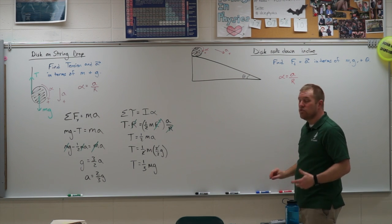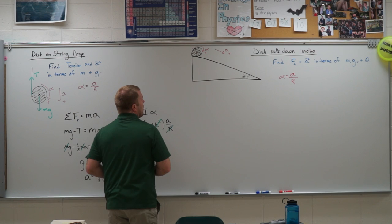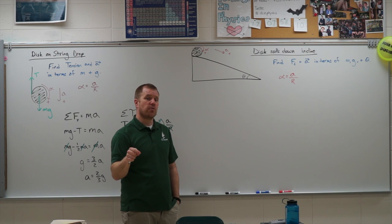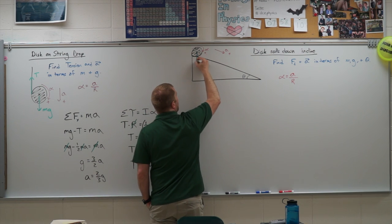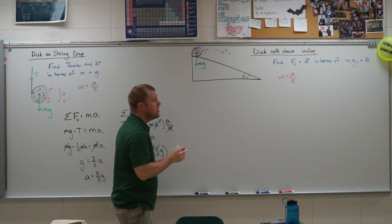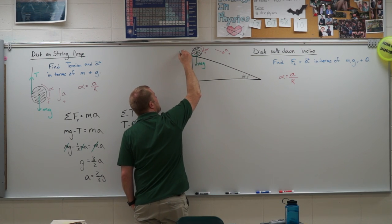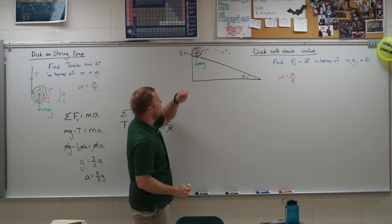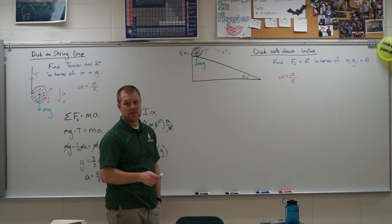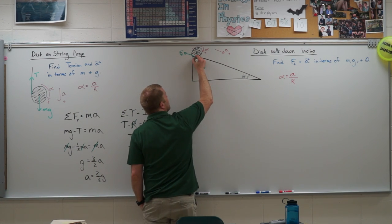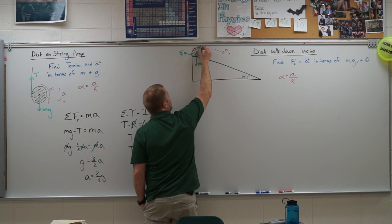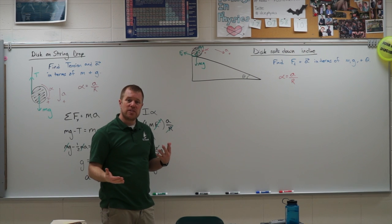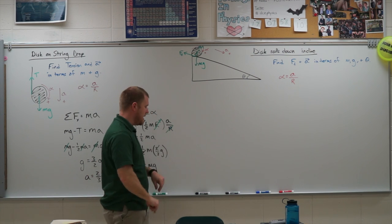Next, draw the free body diagram. For rotation problems we need to know where each force acts. I have gravity acting downward from the center, the force of friction acting up the incline at the surface - it resists the object sliding down - and the normal force acting at the surface perpendicular to it. Those are my forces, and now I set up Newton's second law in both rotation and linear form.